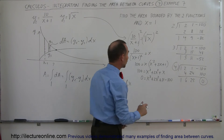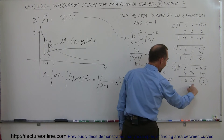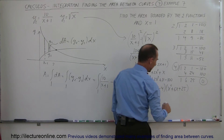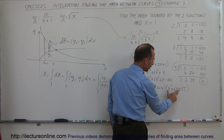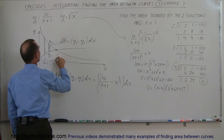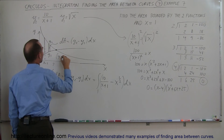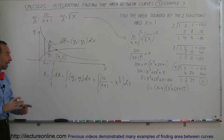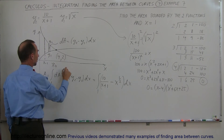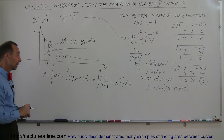Since x equals 4 is a root, the equation factors as 0 equals (x minus 4) times (x squared plus 6x plus 25). That remaining quadratic doesn't factor further, so the only real root is x equals 4. Plugging back in: 4 plus 1 is 5, and 10 divided by 5 is 2, so y equals 2. The two curves meet at the point (4, 2), and our upper limit of integration is 4.